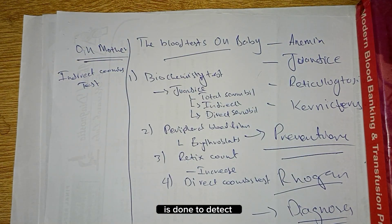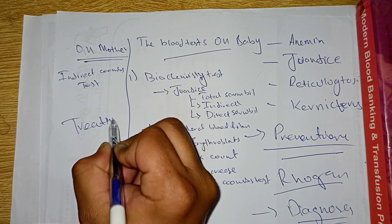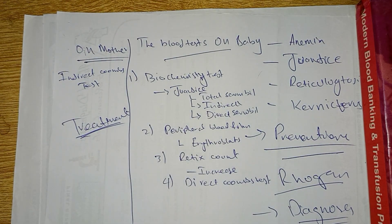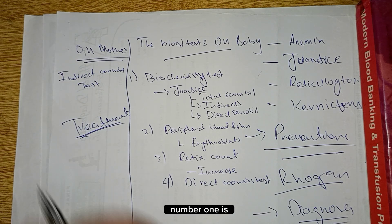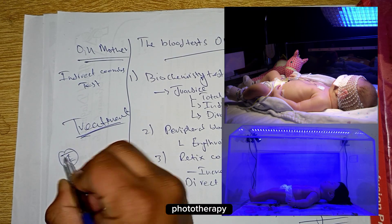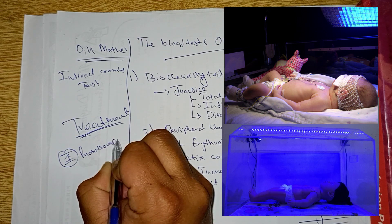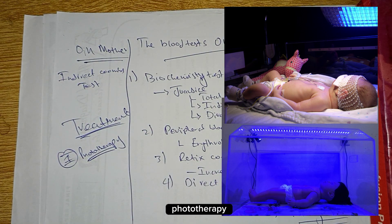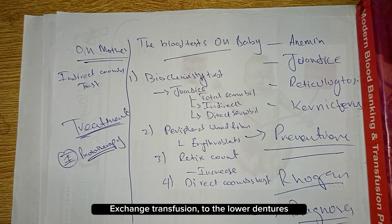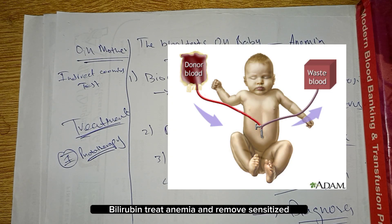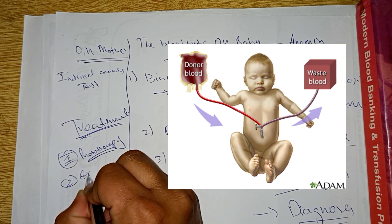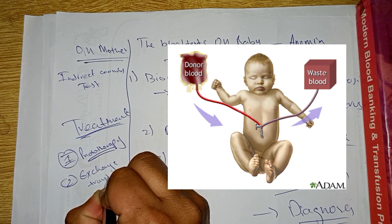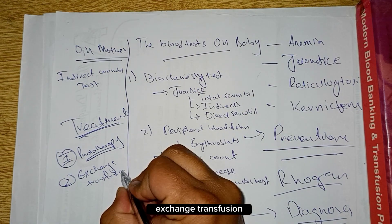Treatment options include phototherapy to lower excessive bilirubin, and exchange transfusion to lower dangerous bilirubin levels, treat anemia, and remove sensitized red blood cells from the circulation.